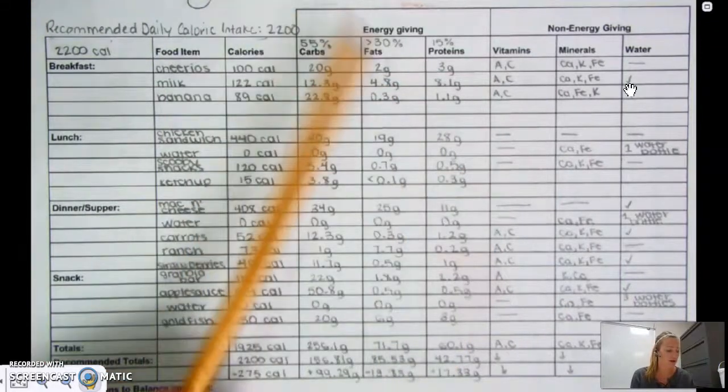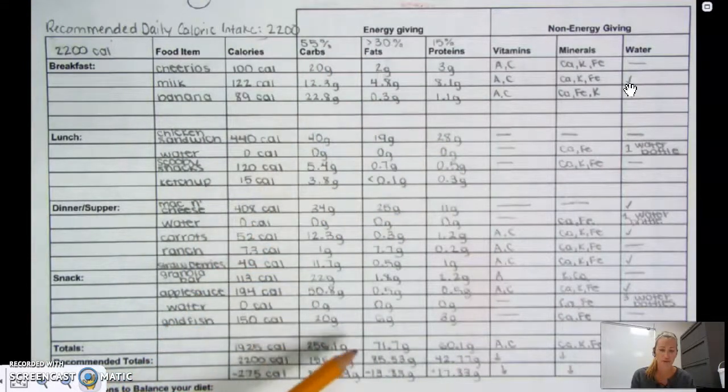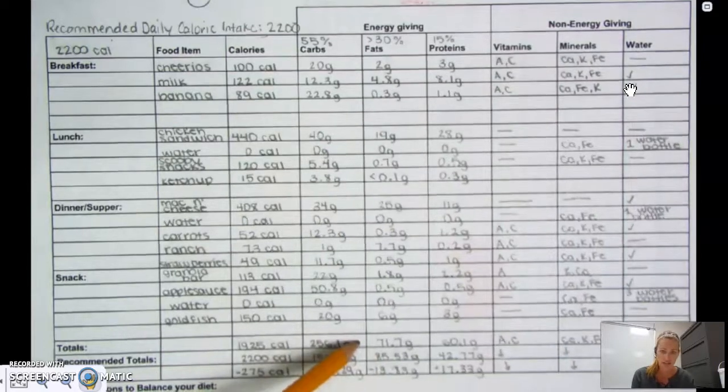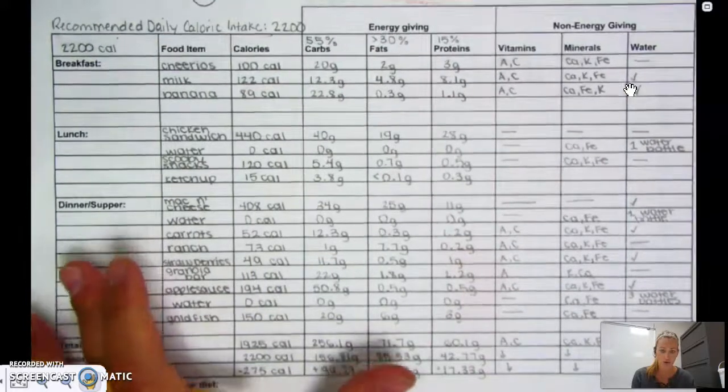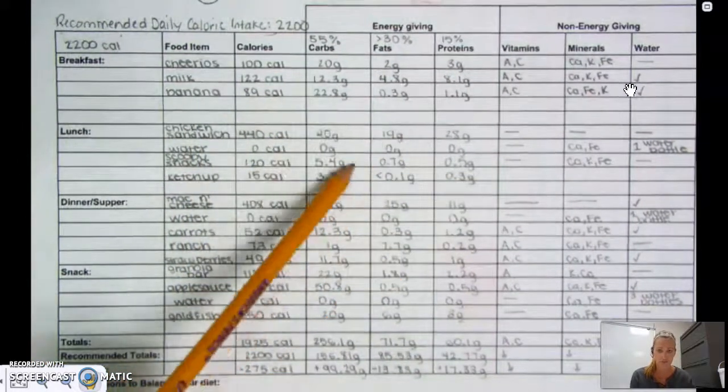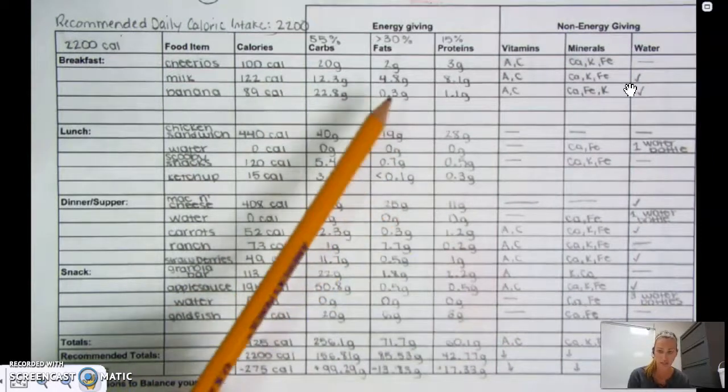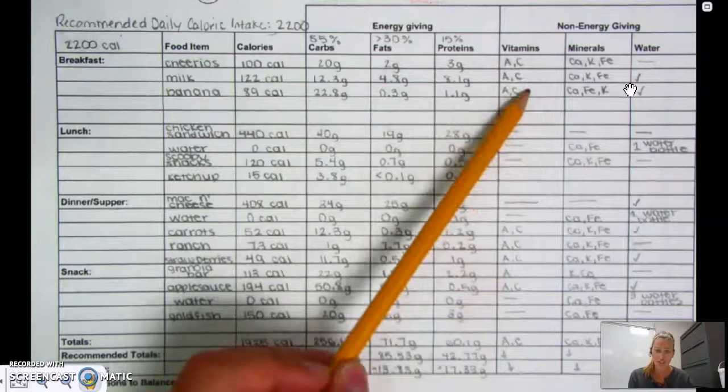These, you need the exact amount of grams so that you are able to figure out how many calories that is. And you guys should all be well aware of how to figure out how many total calories if you have the amount of grams in each different one times four times four times nine, depending on which one you're talking about. And then for your non-energy giving nutrients, we're just asking that you record. We're not asking that you record amounts.